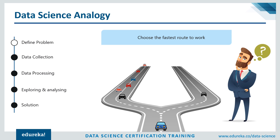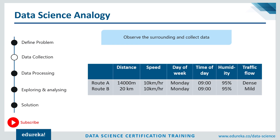How is this related to data science? Let's break it down. First, define the problem: we want to choose the fastest route to the office. Next, collect data: we observed our surroundings and noticed there was a lot of traffic on route A compared to route B. If we put this data into a table, we observe route A and calculate the distance, speed, day of week, time of day, humidity, and traffic flow.